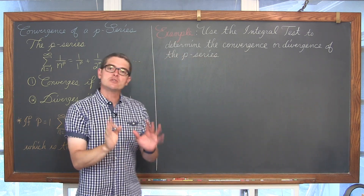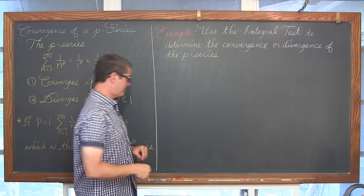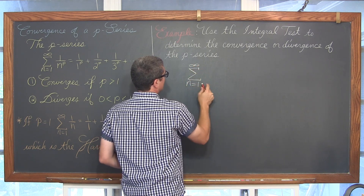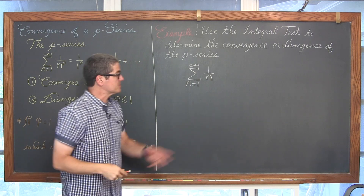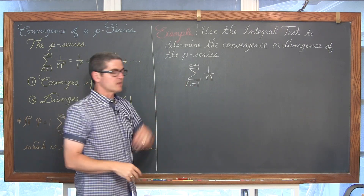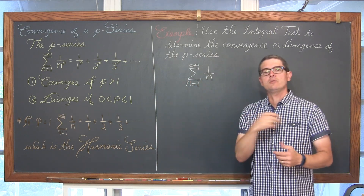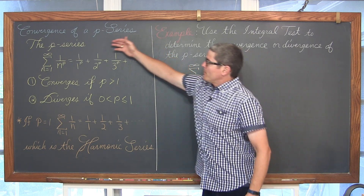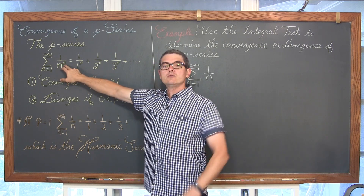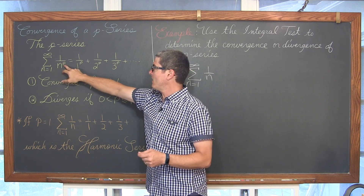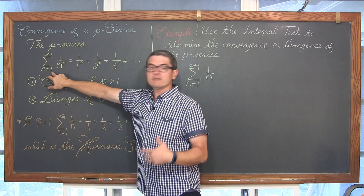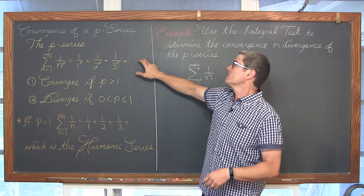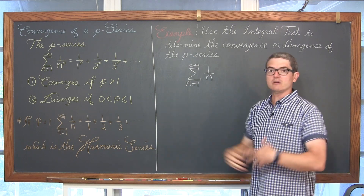We are going to use the integral test, which we just learned, to figure out if the p-series from n going from 1 to infinity of 1 over n — the harmonic series — either converges or diverges, and then go through two examples applying the rules of the p-series. A p-series is a series in the format of 1 over n raised to some constant power p. As you let n start at 1 and go to infinity, we have 1 over 1 to the p, plus 1 over 2 to the p, plus 1 over 3 to the p, and so on, with the series going on forever.